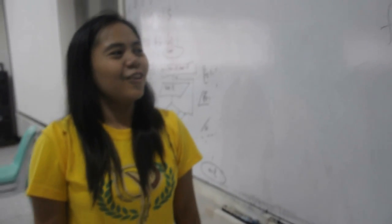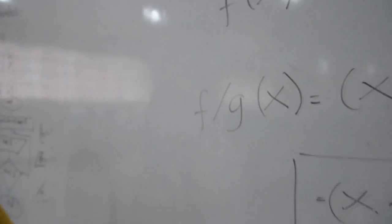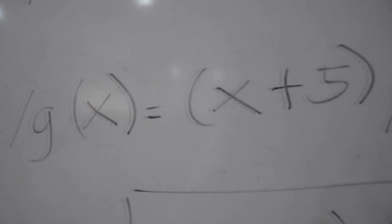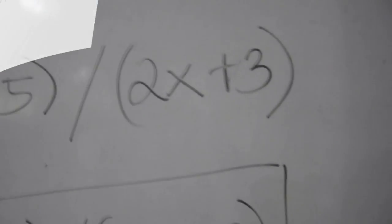The equation: the function of x over the function of g is equal to x plus 5 divided by 2x plus 3.